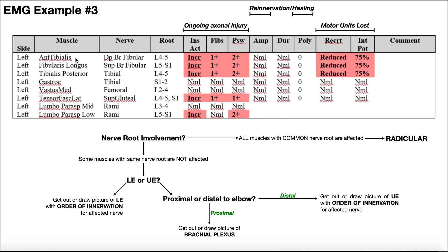Looking up here, the first muscle where there's an issue is the anterior tibialis, or tibialis anterior. We can see that that's innervated by the deep fibular nerve, and the nerve root levels that correspond to that are L4 and L5. The second muscle that's adversely affected is fibularis longus. We can see it's innervated by the superficial fibular nerve, which has nerve root levels L5 and S1.